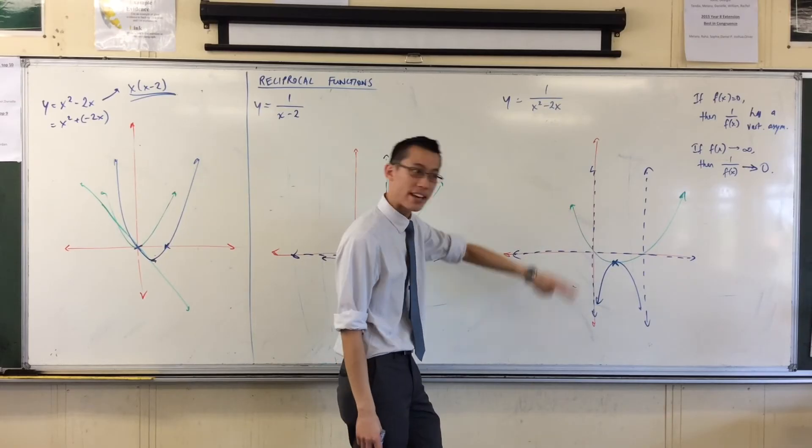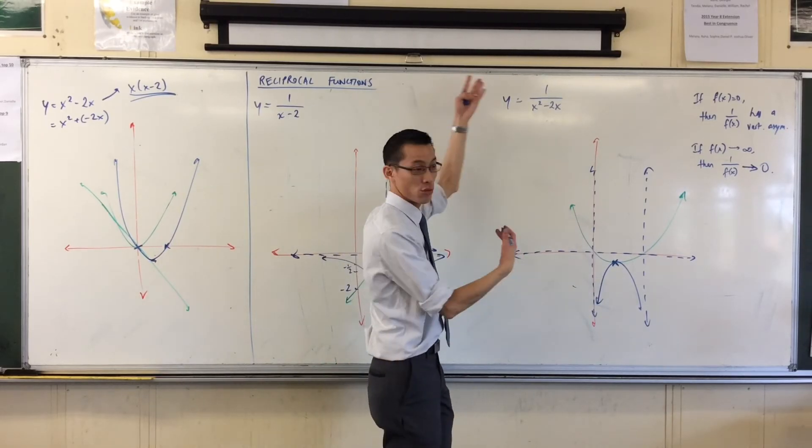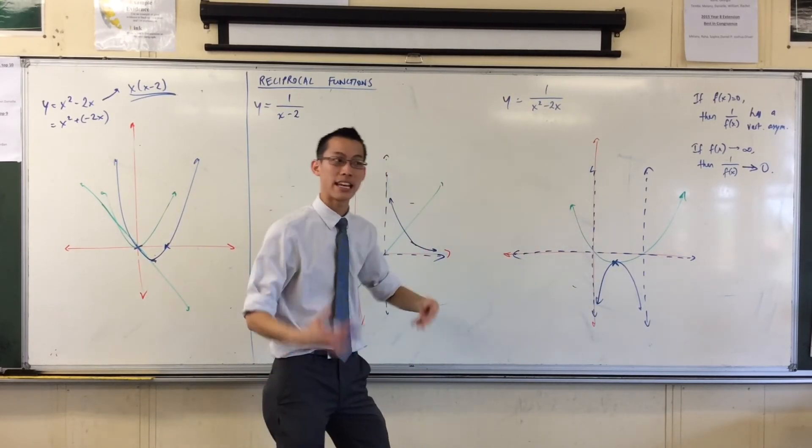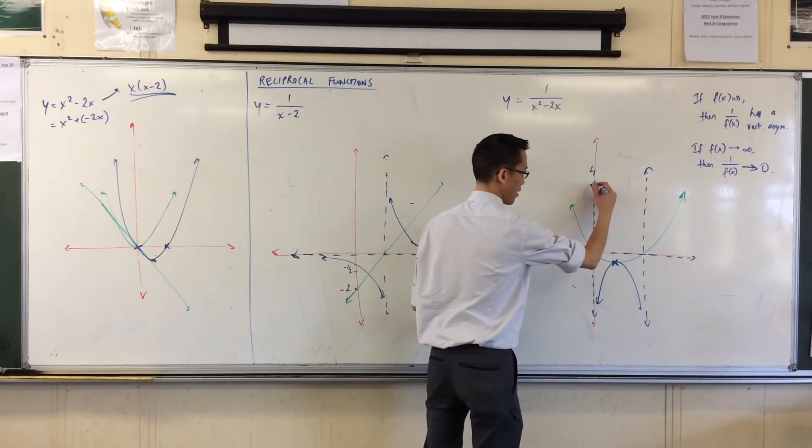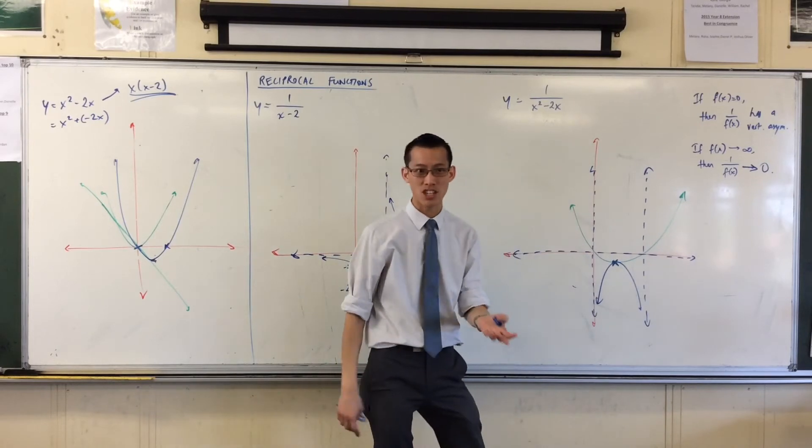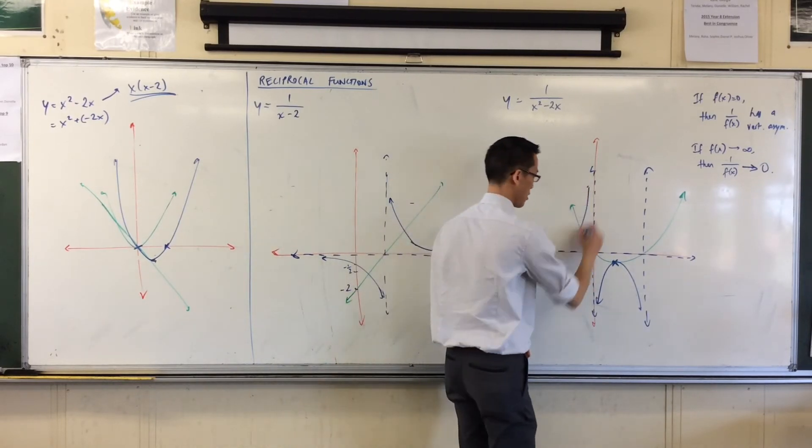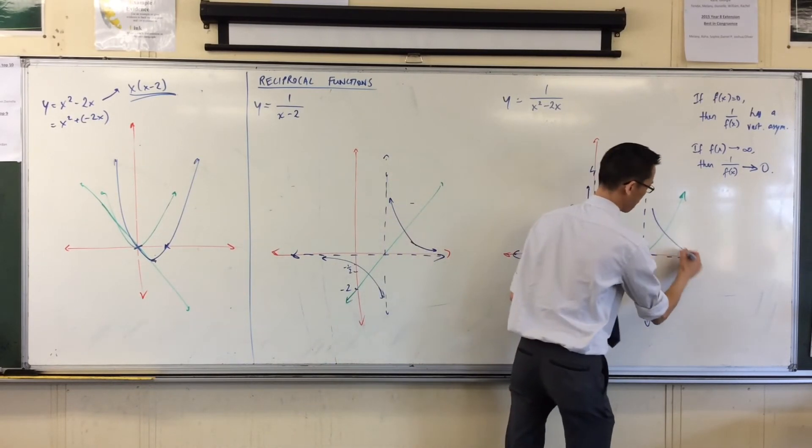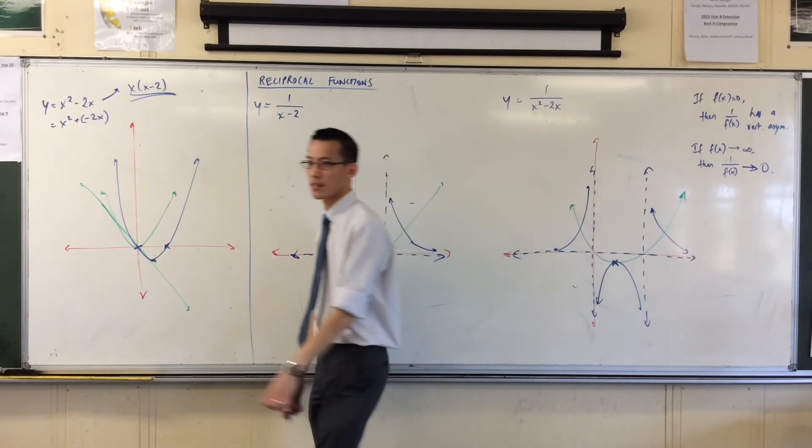You see the denominator, that's my green graph, the denominator is getting huge. So the actual graph, the reciprocal of that, is getting small. So that's how you get these graphs that are going to come down here. Now, I should really be watching for my points of intersection, but you can find those. They're not that hard. And you're going to get these shapes here.